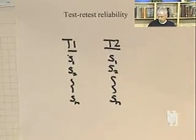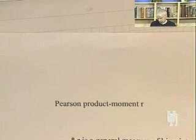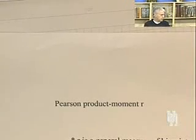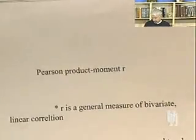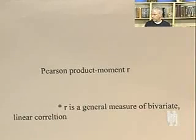Test-retest reliability depends on a statistical tool called Pearson Product Moment R — more often called Pearson R, or simply R. Pearson Product Moment R is a general measure of linear bivariate correlation. It's a general measure — not a tool used only in the context of test-retest reliability. If you wanted to know the relationship between height and weight, you could use Pearson Product Moment R. If you wanted to know the relationship between a person's score on the quantitative section of the SAT and their verbal section score, you could use Pearson Product Moment R.